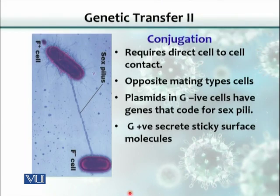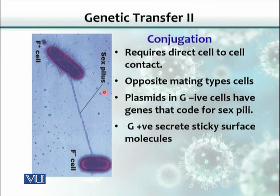Conjugation requires direct cell-to-cell contact. As you can see in this picture, one organism is connected to another through a long tube, and this long tube is called sex pilus. Those organisms that have the ability to make this tube — sex pilus, or pili in the plural — are called F-plus cells, or F-positive cells.